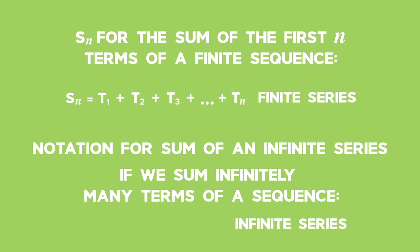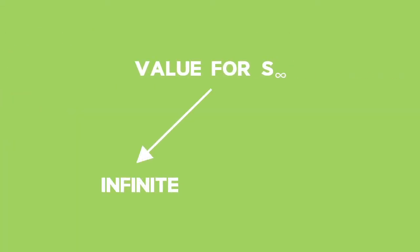We write this sum as S subscript infinity. S to infinity is equal to term 1 plus term 2 plus term 3 and so on. When we find the sum of an infinite number of terms, the answer to that sum can be infinite, or in some cases it can converge — in other words, get closer to a finite real number.